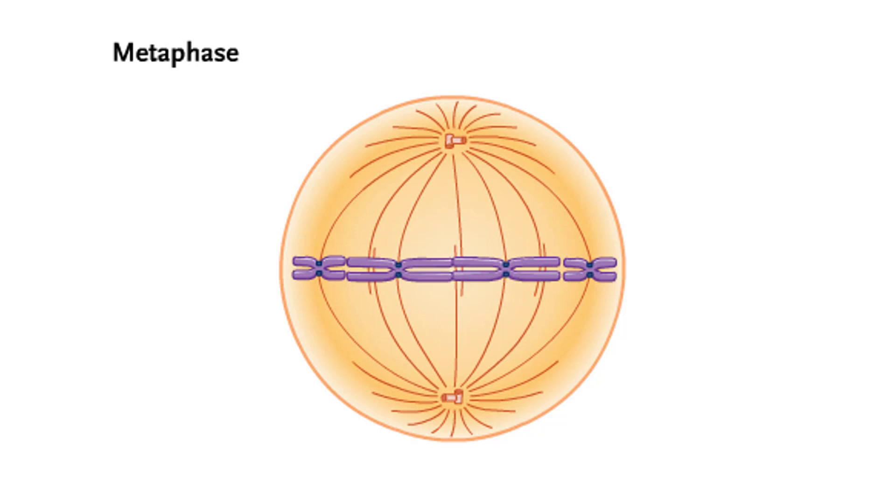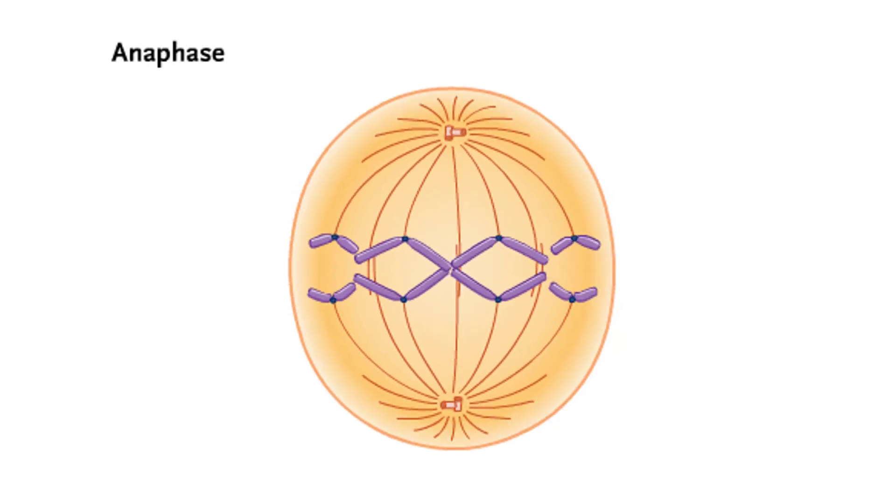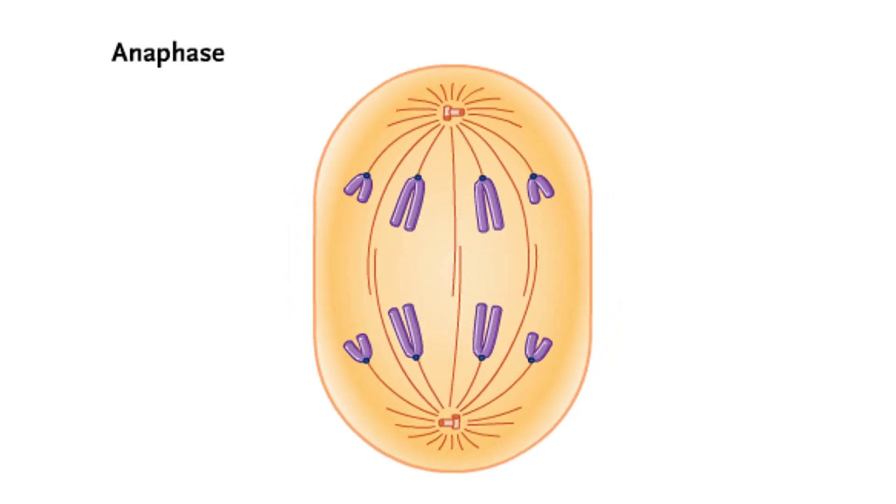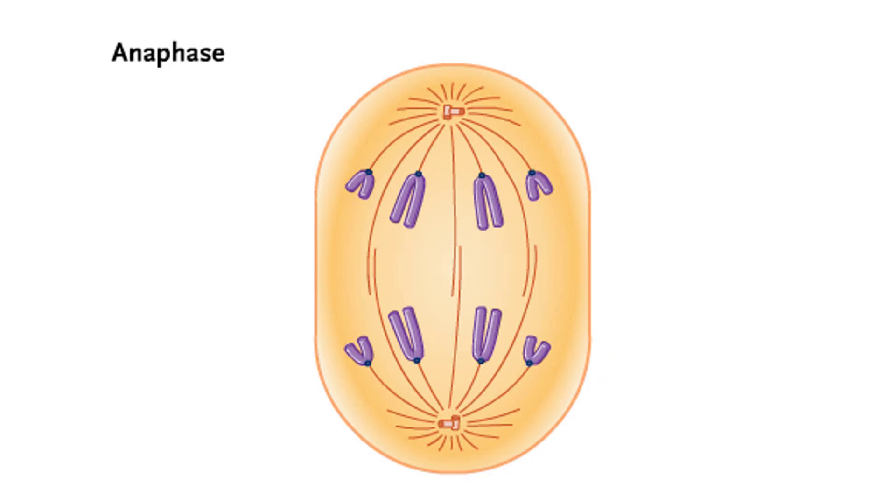At this stage of mitosis, they are at their most condensed form. In anaphase, the sister chromatids of each chromosome separate from each other and move to opposite poles.